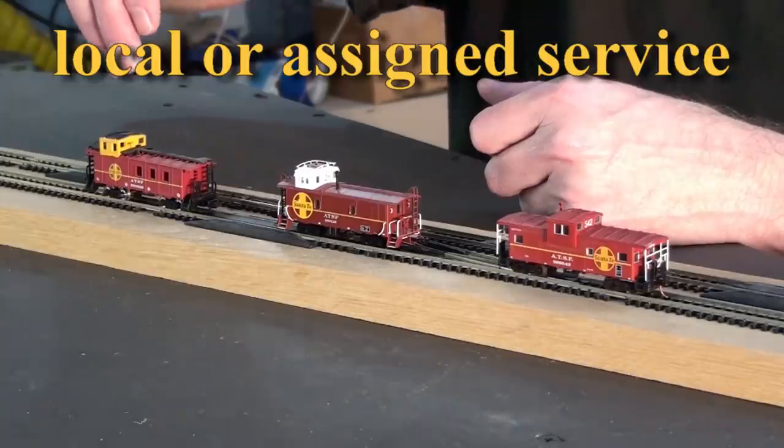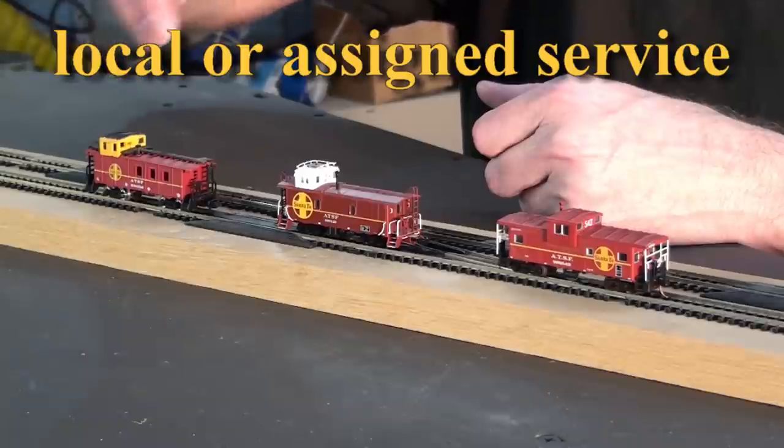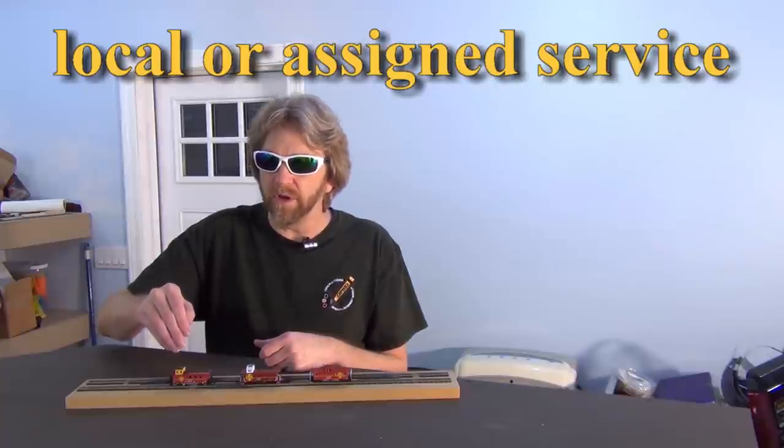So what do these cupula colors indicate, and how can you use them on your model railroad? The yellow one indicates that this caboose is local service only and basically attached to a yard. This will go out with the local and come back.